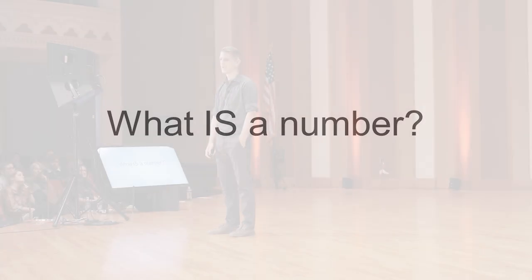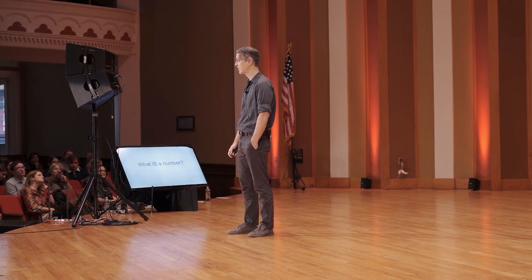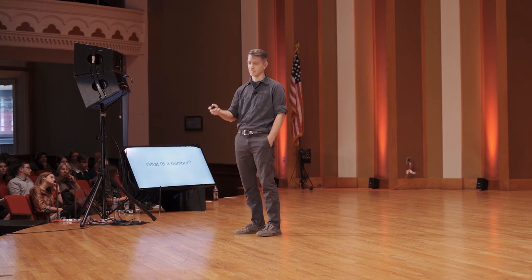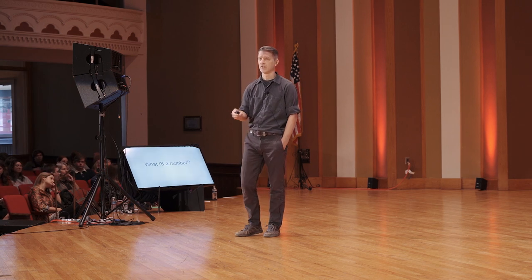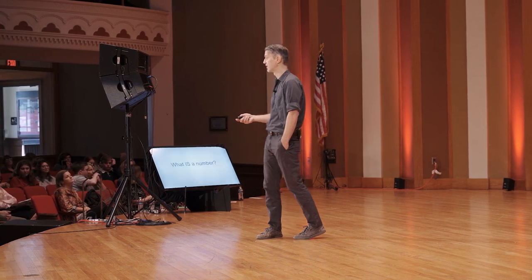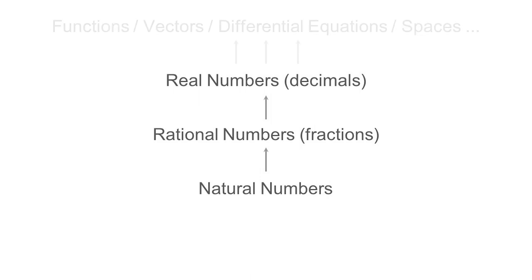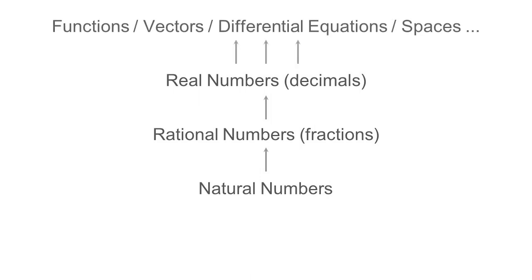For a mathematician, this is an important question. One of the reasons for this is because starting from the natural numbers, mathematicians can build, in precise and deductive ways, increasingly complex mathematical objects. From the natural numbers, we can build the rational numbers, or the fractions. And from the fractions, we can build the real numbers, otherwise known as decimals.